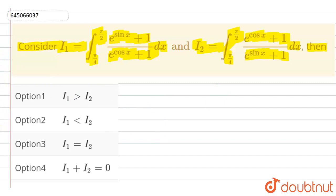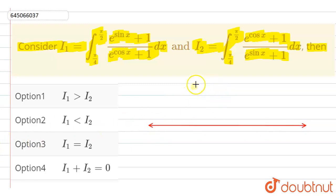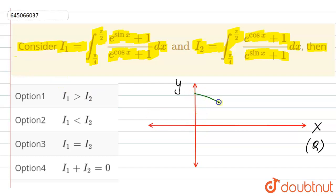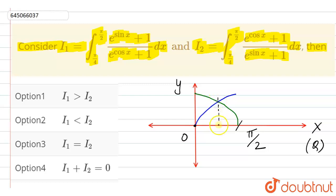If we draw the graphs: this is the x-axis, this is the y-axis, this is angle theta and this is the value. The graph of cos x is like this and graph of sin x is like this. This is at π/2, this is 0, and the point where the value of sin x and cos x is equal is π/4. This is the graph of cos x and this is the graph of sin x.